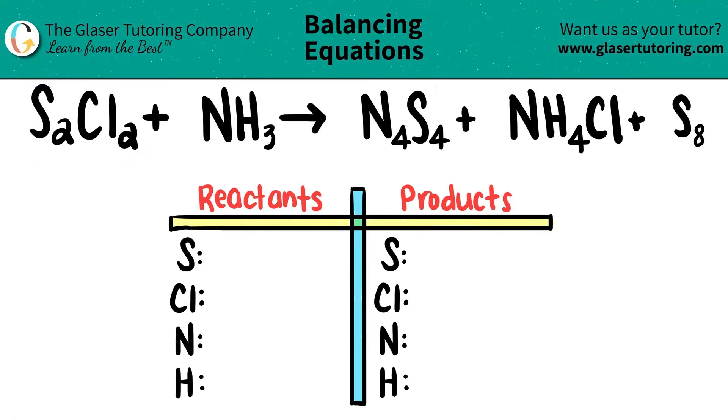Let's start with the left-hand side. I see that I have two sulfurs, two chlorines. I have just one nitrogen. There is no number next to it, so one. And then I see that I have three hydrogens, so three.